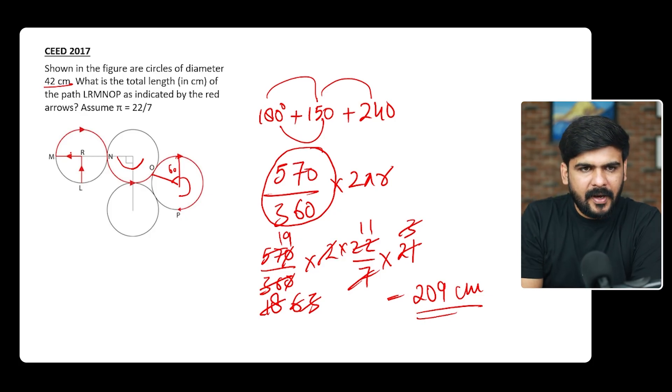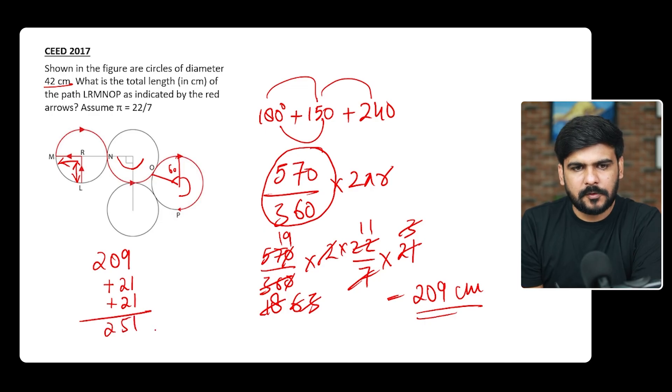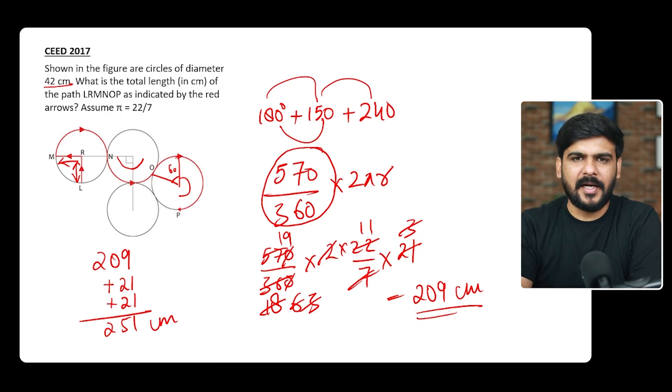I hope this is clear. In this method, you can directly use all the angles together, or you can also try to find out separately as I told you. So this 209 is for the whole curved portion. Now look at it here: RM and LR are also there, right? So 209 for the curved, then RM would be one radius, that is 21, and then LR also would be one radius. So it would be 42 and 209, that's 251 centimeters, which would be the whole path.